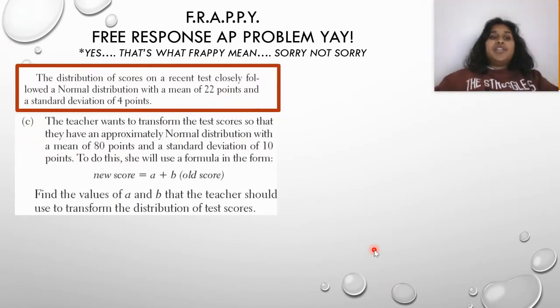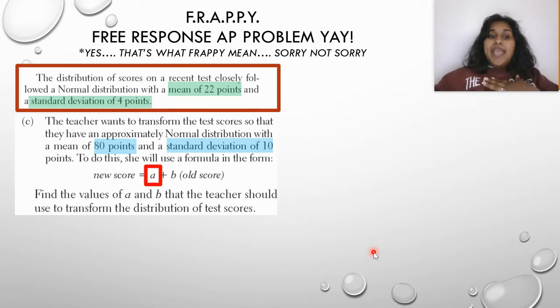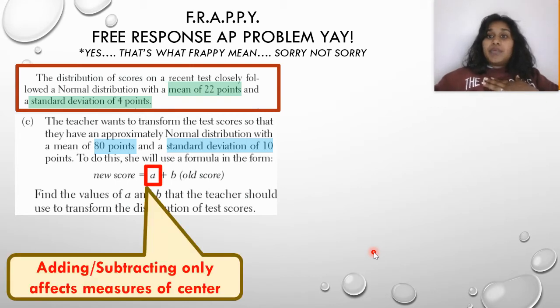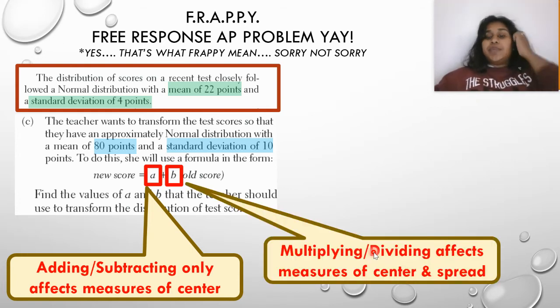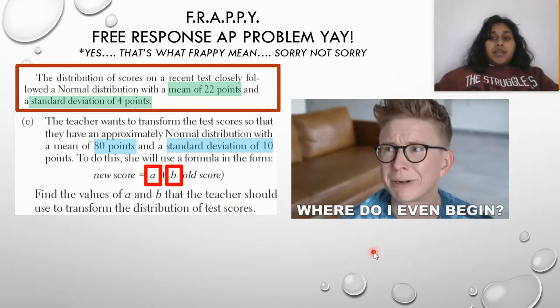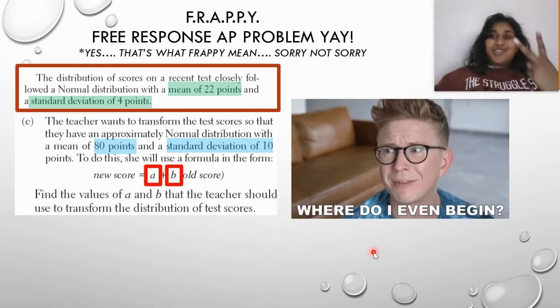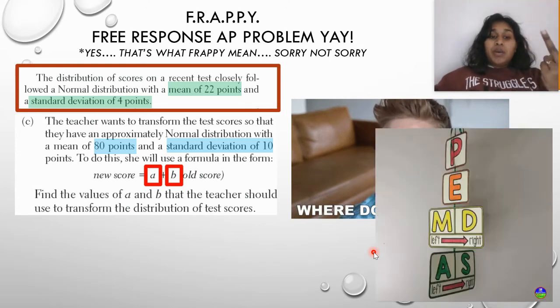Now this time we're dealing with transformation. So this teacher decided to transform the mean to 80 points from our 22, the standard deviation to 10 points from our 4. She used a formula where we've got an A and a B that we have to solve. So let's break up that A and B. A is a constant that's being added or subtracted. And remember, addition and subtraction for transformation of normal distributions only affects measures of center, mean and median. B, multiplication and division, affects measures of center and spread. So where do we still begin? How do I still solve? I've got two variables to solve for. Well, here's a big hint. Let's use our order of operations.